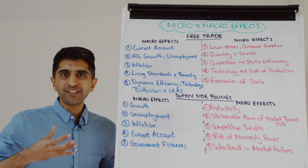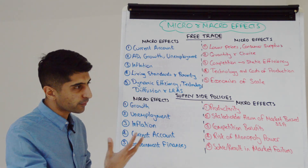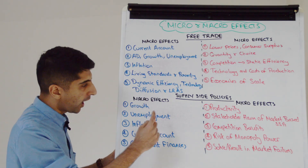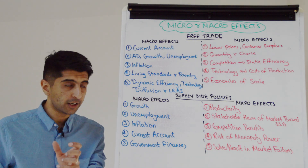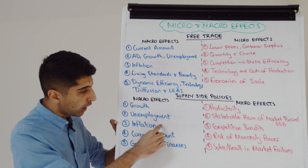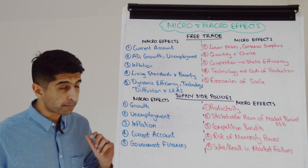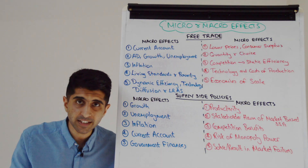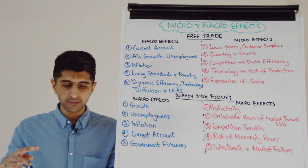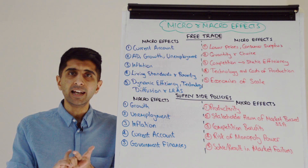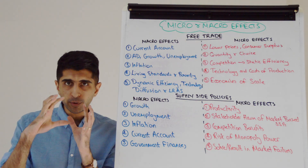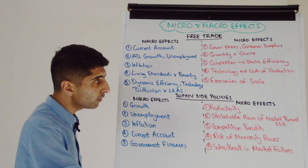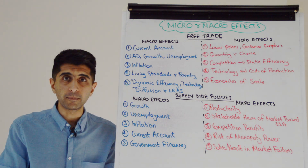Supply side policies are clear macro topic areas. So the macro effects are very simple — just go through LRAS. We get higher growth, lower unemployment, especially lowering the natural rate of unemployment, lower inflation, improvements in the current account if exports are now more competitive. But also there might be a hit to government finances linked to the budget deficit worsening, linked to the national debt rising if we go interventionist supply side policies. Macro effects are simple, but even the micro effects are very simple.